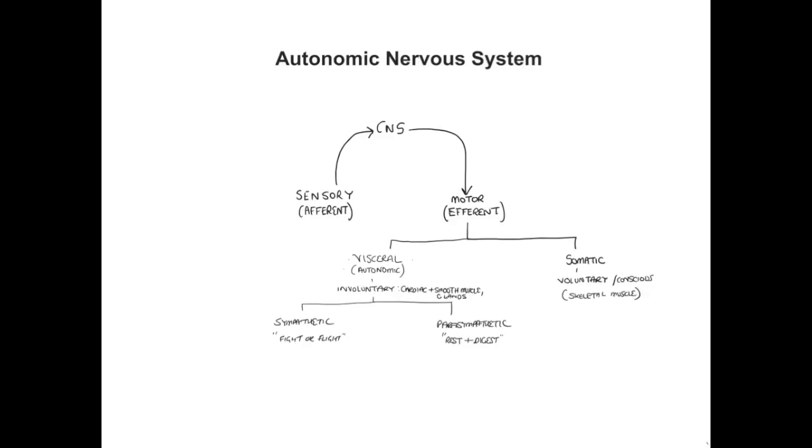If we look at the effects on the circulatory system, which includes the heart and cardiac smooth muscle, we find that the sympathetic nervous system has a stimulatory effect in terms of increasing heart rate, enhancing the contractile force of the muscle, and also accelerating conduction through the atrial ventricular conducting systems.